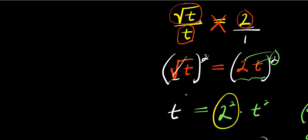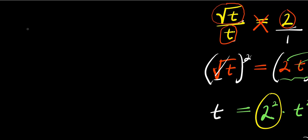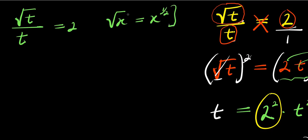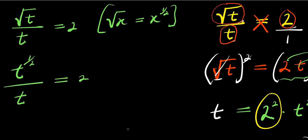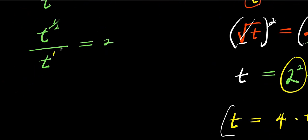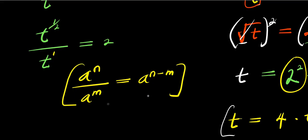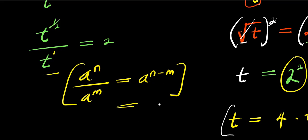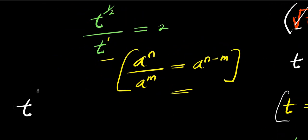Now the next thing we are going to do is solve this using another method. We have square root of t divided by t equals 2. If you have square root of x, this is like having x to the power of 1 over 2. So square root of t is like having t to the power of 1 over 2. We have t to the power of 1 over 2, divided by t — and t is just like t to the power of 1 — so we apply the index law: a^(1/2) divided by a^1 equals a^(1/2 − 1), giving t to the power of 1 over 2 minus 1 equals 2.